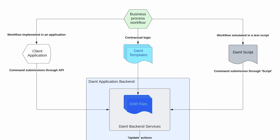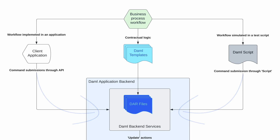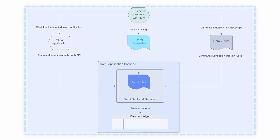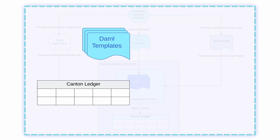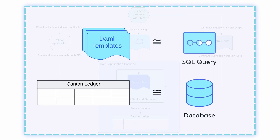Through these APIs and scripts, we submit commands to create or archive contracts, exercise choices, and search for contracts. A useful analogy is to think of the Ledger as a database, and the code written in DAML templates as SQL queries that directly interact with the database.